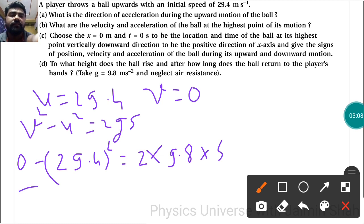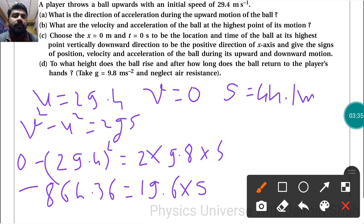So minus 864.36 = 2 × 9.8, so that will be 19.6 × s. So now s = 864.36 ÷ 19.6, so we will get 44.1. So s = 44.1 meters - that is the height the ball rises.